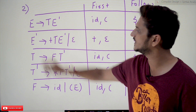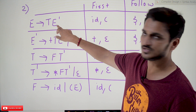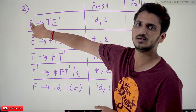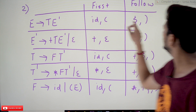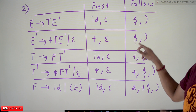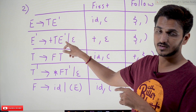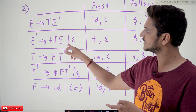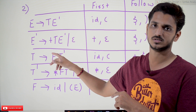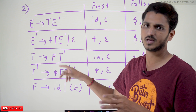Next is FOLLOW of E-dash. On the right-hand side we find E-dash here. After E-dash there is nothing, so FOLLOW of E-dash equals FOLLOW of E. FOLLOW of E is {$, )}. That's why we get the same. One more note: if you encounter FOLLOW of E-dash referencing FOLLOW of E-dash itself, ignore those circular references — eliminate them and don't consider those.